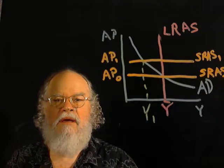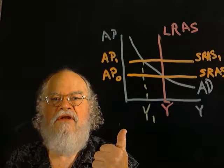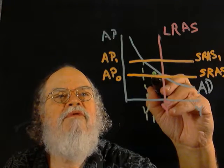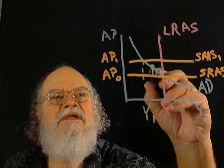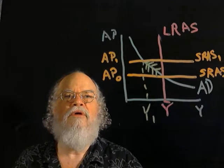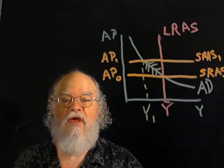Here's the negative supply shock timeline. A sudden increase in AP, which shifts the SRAS curve up. The economy moves upward along the AD curve to lower output, Y1, and higher prices, AP1.